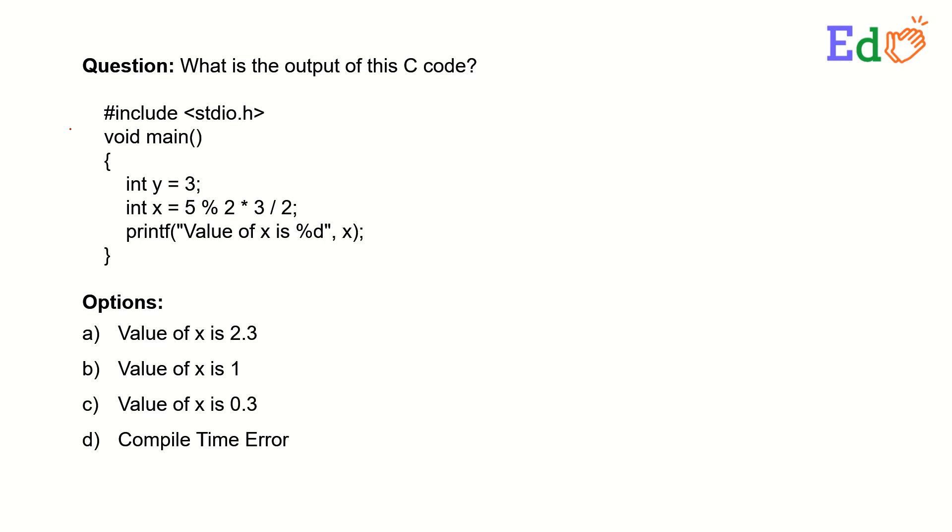Now we are having a question to find out the output of the C programming. We are having three lines in this program: one is y equal to 3, then int x equals 5 modulo 2 times 3 divided by 2, arithmetic operation operators with some number of operations. Then after it will find out the value of x. We have the options 2.3, 1, 0.3, and compile time error. We have to find out which option is the correct one.